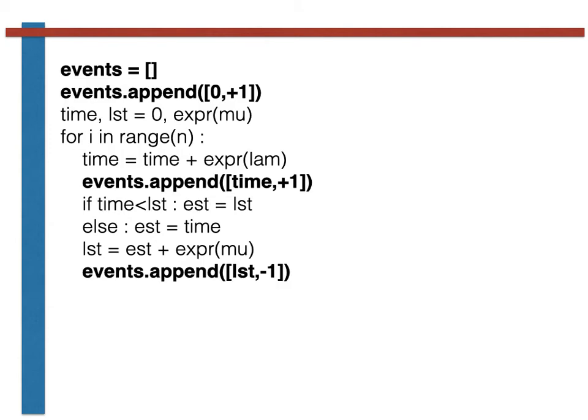I have reproduced the code from the previous slide on this new slide. Now, however, I have introduced some additional lines. These lines create a list called events that tracks the times at which the length of the queue changed and how the length of the queue changed.